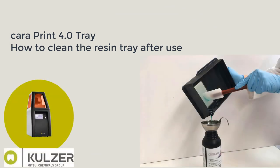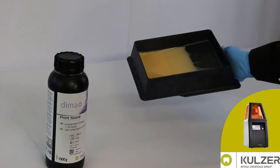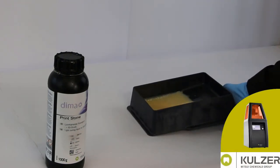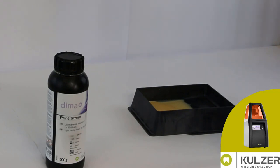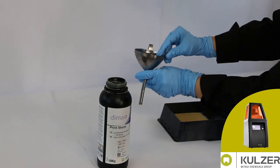This video shows the cleaning of the resin tray after printing. After printing, at the latest at the end of a working day, the photopolymer must be filled back into the bottle since small particles can fall into the liquid photopolymer.